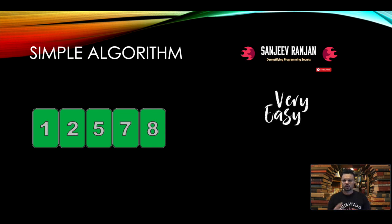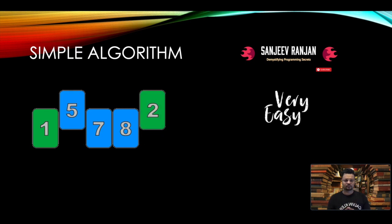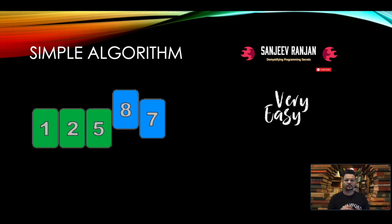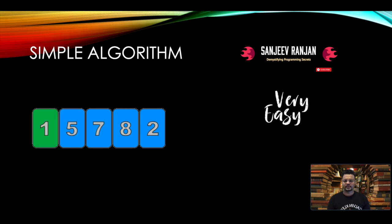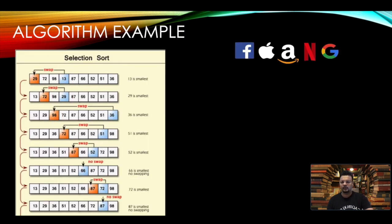The whole algorithm works pretty much like insertion sort, but here we are just selecting the minimum element and trying to place it to the correct position. The code is also pretty simple, and the complexity of this algorithm is O(n²).